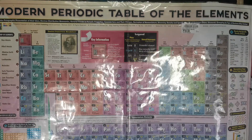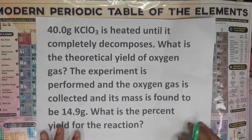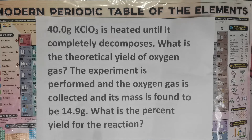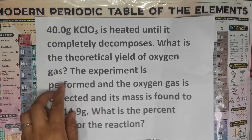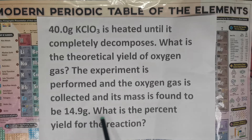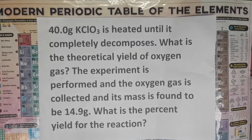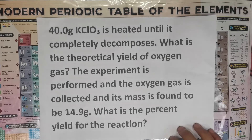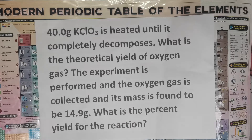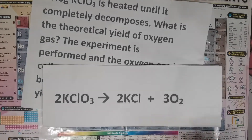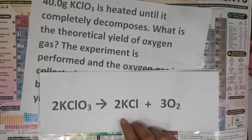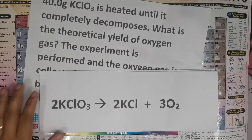Let us go with the computation process. We have here the problem, which is also written in your module. We have: 40 grams of potassium chlorate is heated until completely decomposed. What is the theoretical yield of oxygen gas? The experiment is performed and the oxygen gas collected has a mass of 14.9 grams. What is the percent yield for the reaction? The chemical equation given is: 2 KClO₃ → 2 KCl + 3 O₂.